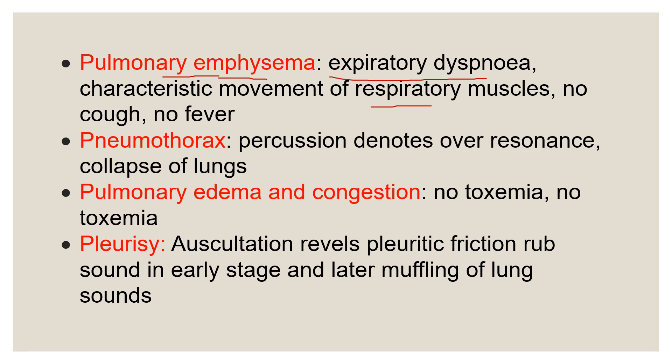Another disease required to be differentiated from pneumonia is pneumothorax — accumulation of gas into the pleural cavity. Percussion denotes over-resonance. When there is gas in the pleura, it causes pressure on the lung and causes collapse of the lung. With the help of percussion and auscultation, we can differentiate these two conditions.